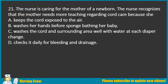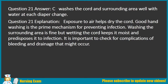Question 21. The nurse is caring for the mother of a newborn. The nurse recognizes that the mother needs more teaching regarding cord care because she: A. Keeps the cord exposed to the air. B. Washes her hands before sponge bathing her baby. C. Washes the cord and surrounding area well with water at each diaper change. D. Checks it daily for bleeding and drainage. Answer: C. Washes the cord and surrounding area well with water at each diaper change. Explanation: Exposure to air helps dry the cord. Good hand washing is the prime mechanism for preventing infection. Washing the surrounding area is fine but wetting the cord keeps it moist and predisposes it to infection. It is important to check for complications of bleeding and drainage.